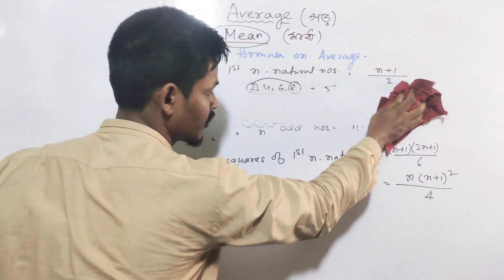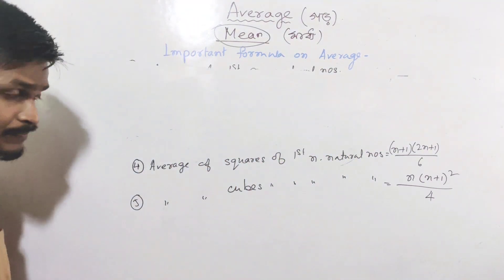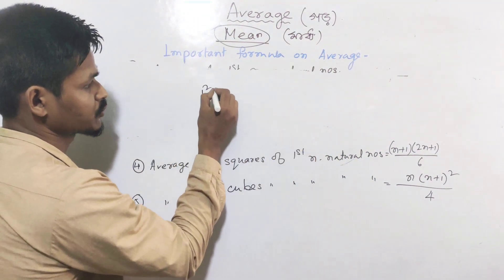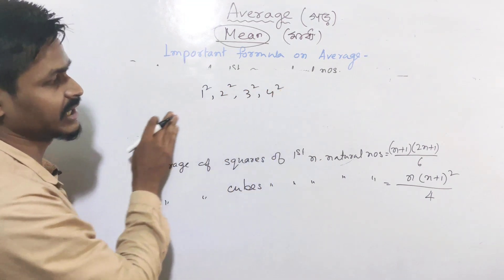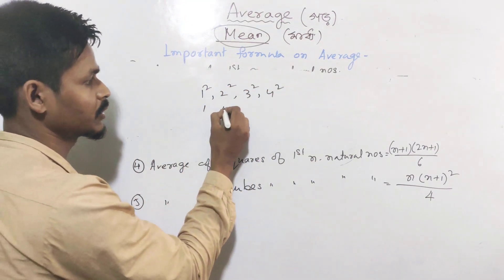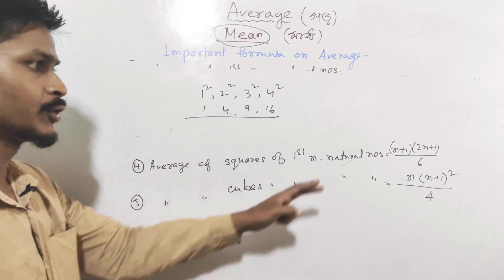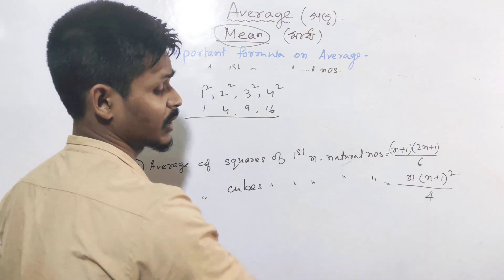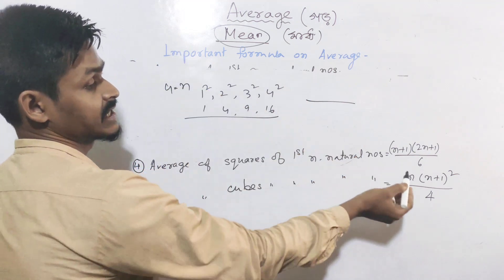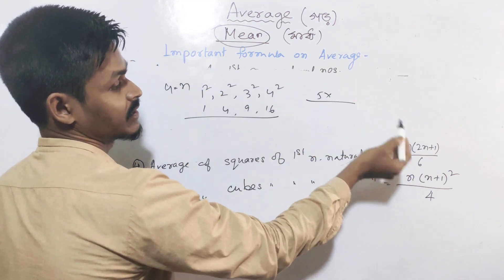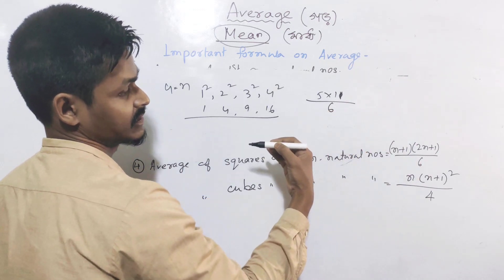The average of squares of first n natural numbers uses the formula: n plus 1 into 2n plus 1 divided by 6. For example: 1², 2², 3², 4² equals 1, 4, 9, 16 — no equal spacing. Applying the formula with n equals 4: n plus 1 is 5, 2n plus 1 is 9. So 4 times 5 times 9 divided by 6 equals 30.